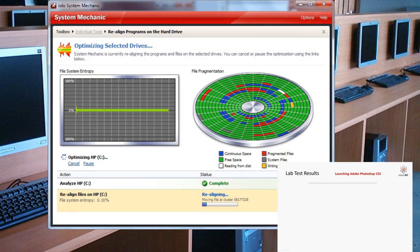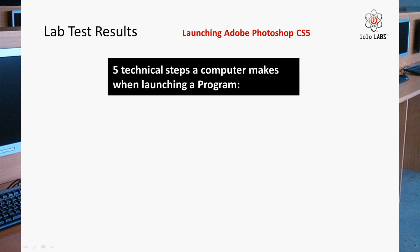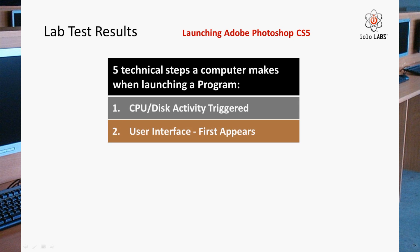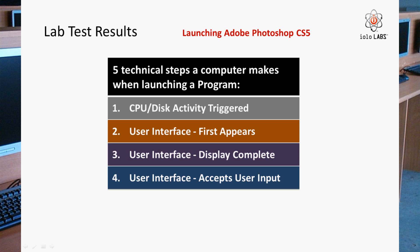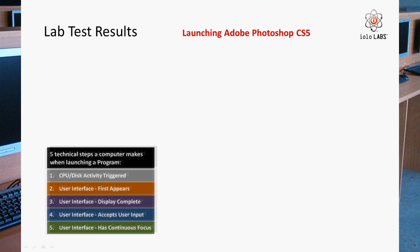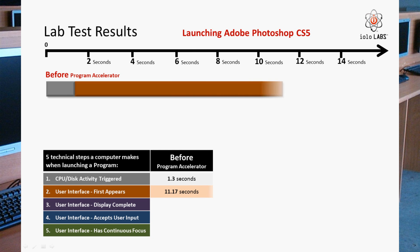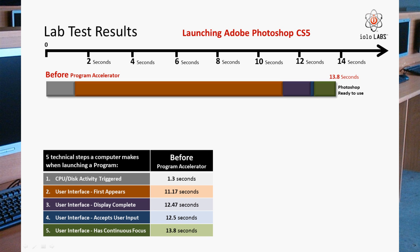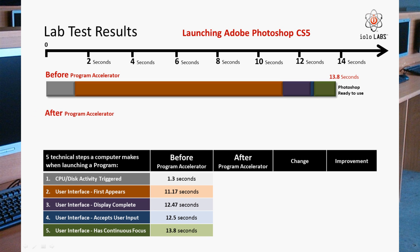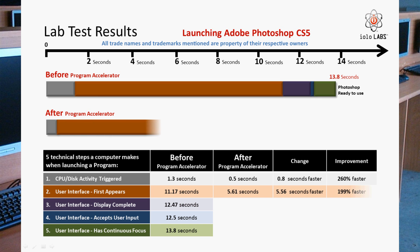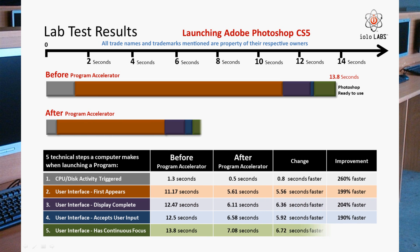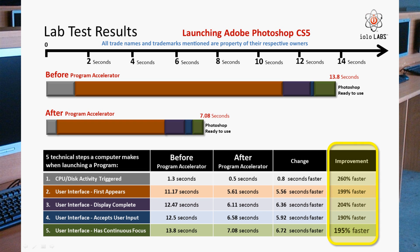So how effective is Program Accelerator? We put it to the test in the lab by measuring the five key stages a user experiences when launching a program — from the first mouse click to the moment the program can actually be used. For this test, we measured how long it takes to launch Photoshop, which is made up of several hundred files that can easily become misaligned. Before running Program Accelerator, Photoshop took 13.8 seconds to launch. Over time, this lag will continue to worsen. After running Program Accelerator, we've practically cut the time in half to only seven seconds — or 195% faster.